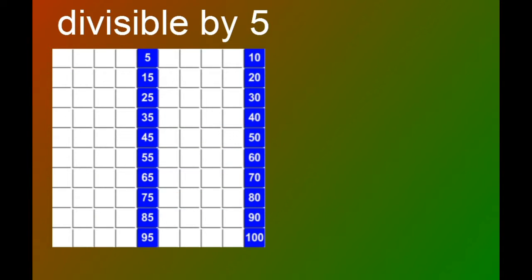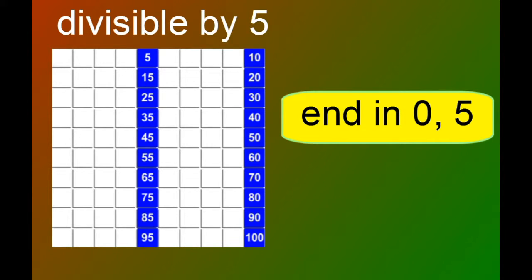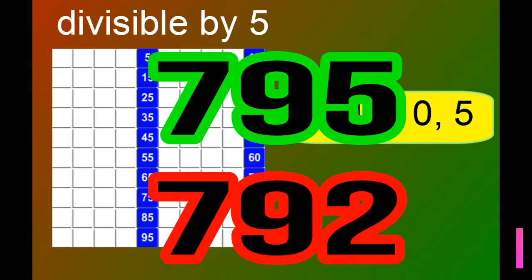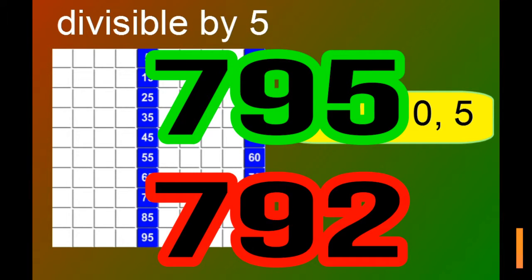What about numbers which are divisible by 5? Here, I've got the numbers divisible by 5 going up to 100, and they all either end in 0 or 5. And of course they also go on forever, so I can tell you that 795 is divisible by 5, but 792 is not divisible by 5.